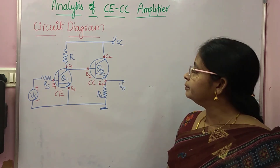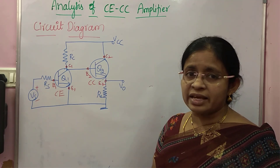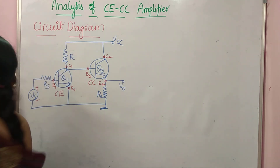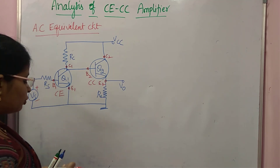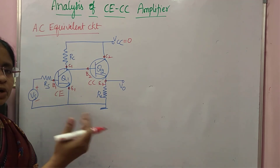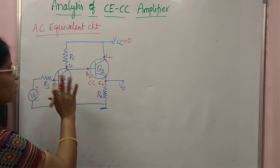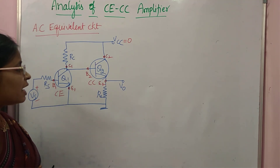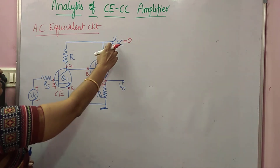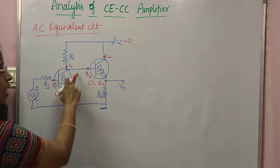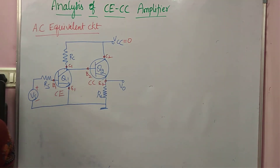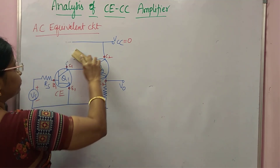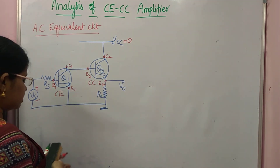The first step is drawing the AC equivalent circuit. The conditions to follow are: make VCC equal to zero and make all capacitors shorted. The circuit I am considering does not have any capacitors, so no need to worry about the second point. As VCC is zero, RC is grounded — from C1 to ground and C2 other end is at zero.